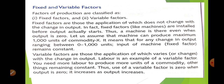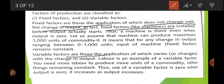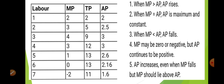First, a quick revision of fixed and variable factors. Fixed factors are those which do not change with the level of output — examples are machinery, equipment, etc. Variable factors are those which vary with the level of output, like labor, raw material, etc. Now, here is given the relationship between TP, MP, and AP.